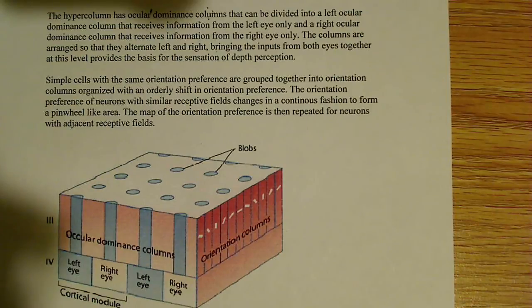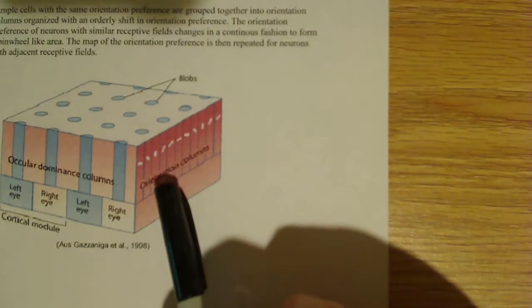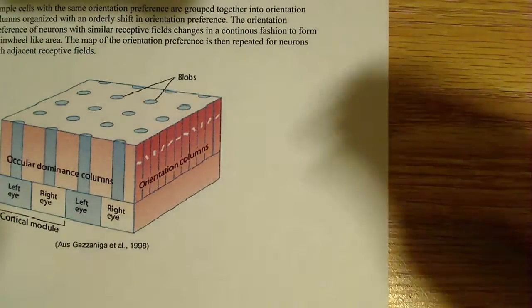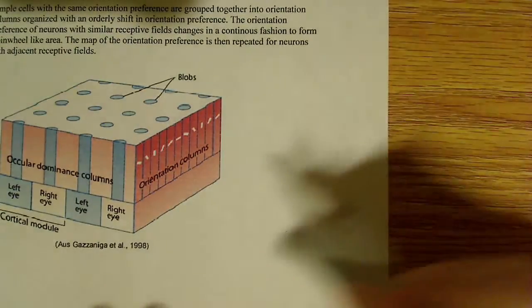organized with an orderly shift in orientation preference. So what you can see over here is that these are the orientation columns, and if you can see, I don't know if this is too visible, yeah, it's pretty visible,